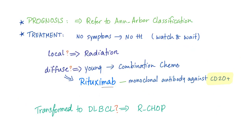For prognosis of follicular lymphoma, please refer to the Ann Arbor classification. Regarding treatment: asymptomatic patients receive no treatment. Localized disease is treated with radiation. Diffuse disease depends on age — young patients receive combination chemotherapy; older patients receive Rituximab, a monoclonal antibody against CD20. If there is transformation to diffuse large B-cell lymphoma, add R-CHOP.